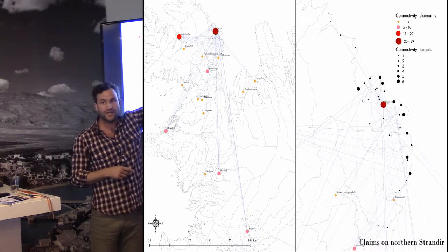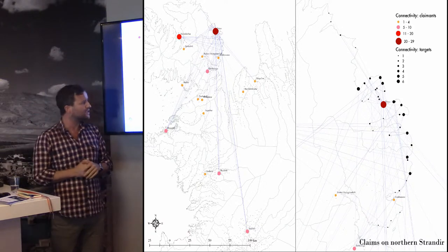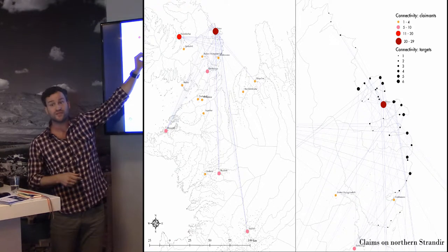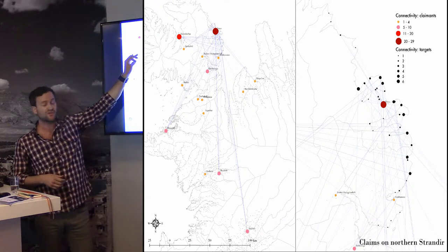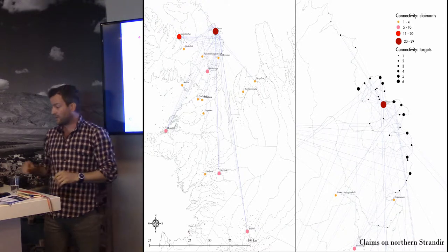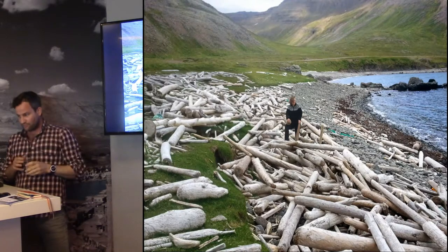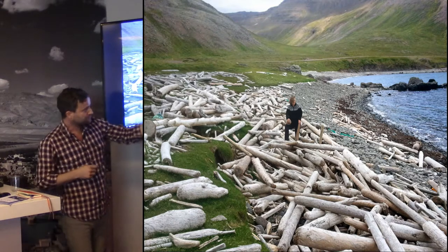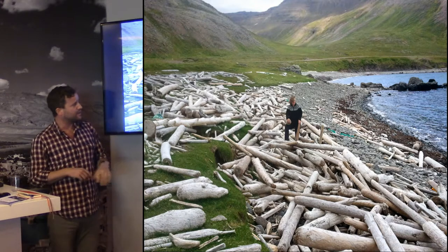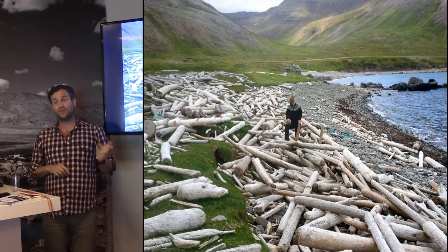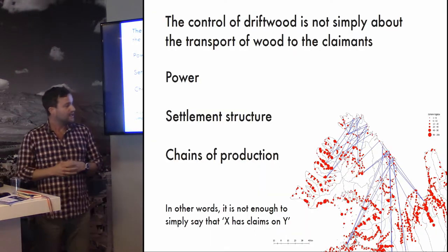Driftwood in Iceland generally comes from Siberia and northern Norway, washing onto the shores of northern Iceland. Because Iceland isn't forested to any significant degree — we have dwarf birches and that kind of thing — driftwood is actually a crucial resource for construction across the country. The management, claim, and transport of driftwood from northern shores to the south played a vital part in Icelandic history. These beaches were full of driftwood; it came very reliably and played a key part in construction.